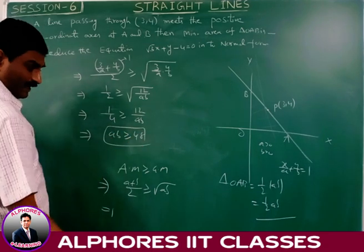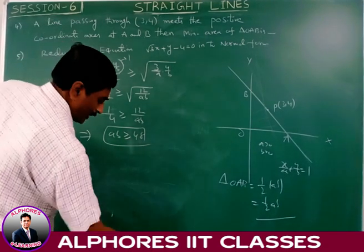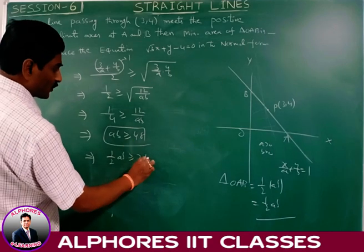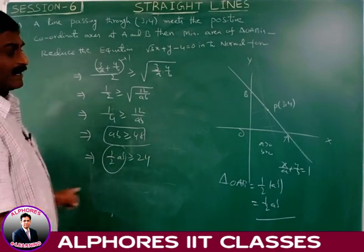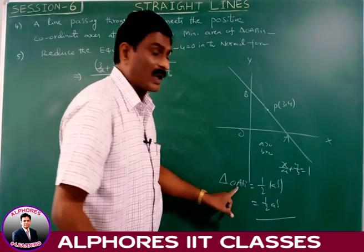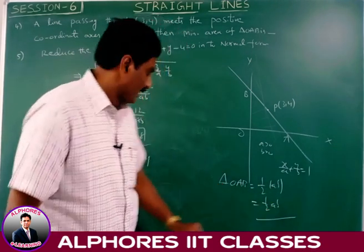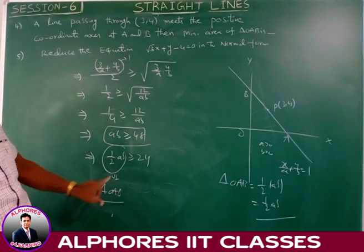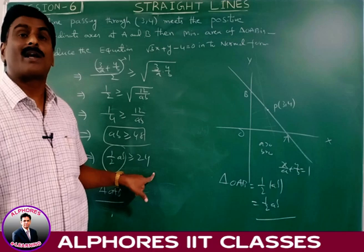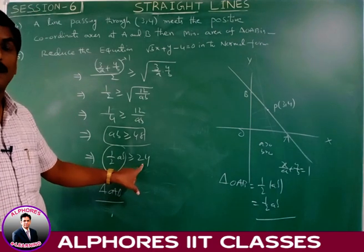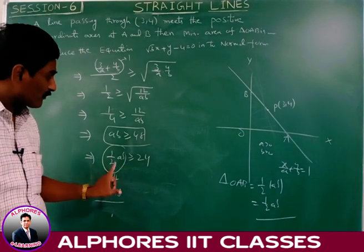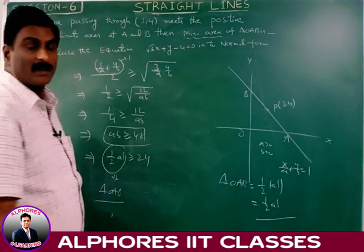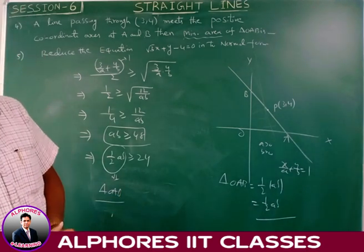Since AB ≥ 48, the area (1/2)AB ≥ 24. The area of triangle OAB is always greater than or equal to 24. Therefore the minimum area of triangle OAB is 24. This is a very very important result.